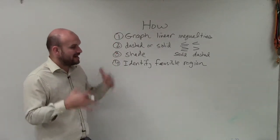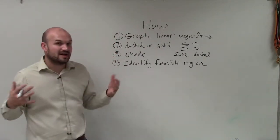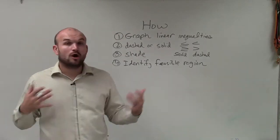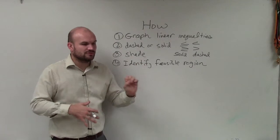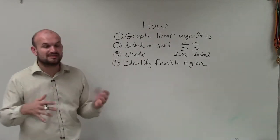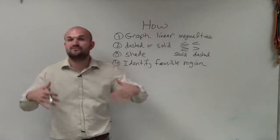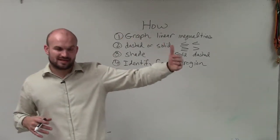Plug them in for x and y, and then identify if your inequality is true or false. If your test point is true, that means all the points on that side of the line are true. If it's false, then you shade on the other side of the line.